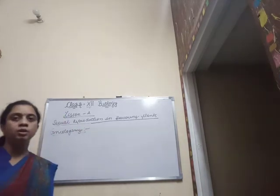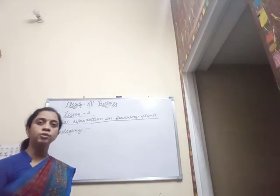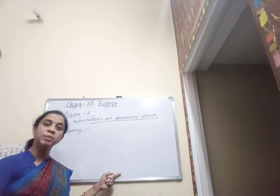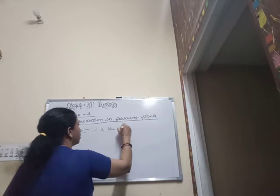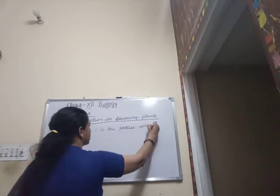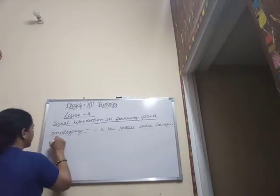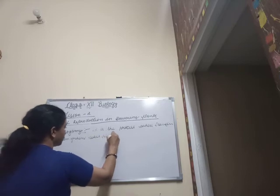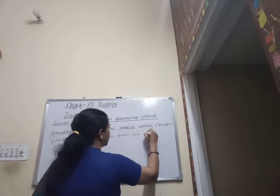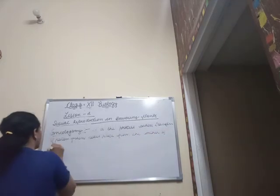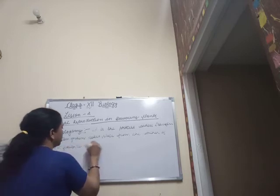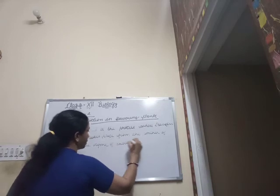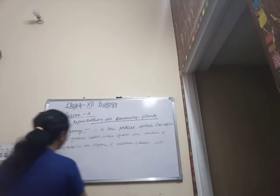The second type is geitonogamy. Geitonogamy is a process wherein the pollen grains are shed or transferred from the anther of one flower to the pistil of another flower of the same plant. That is, transfer of pollen grains takes place from the anther of one flower to the stigma of another flower, but of the same plant.